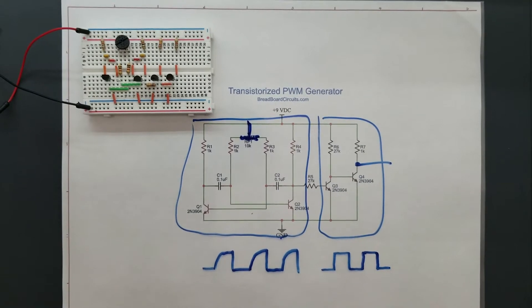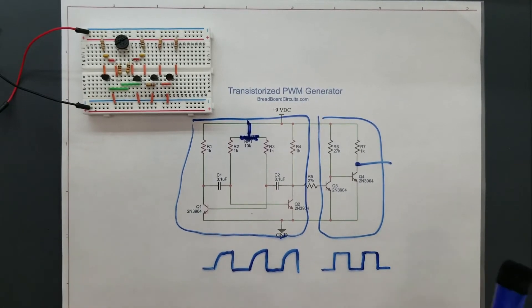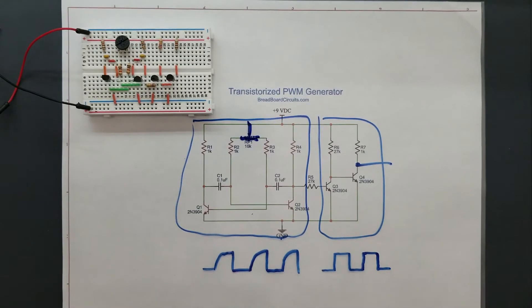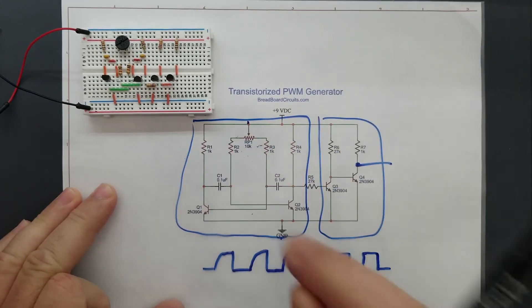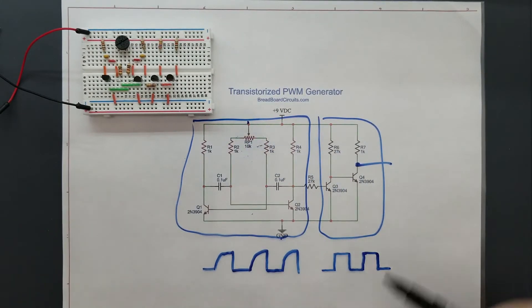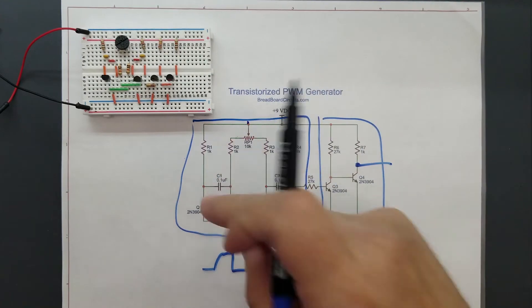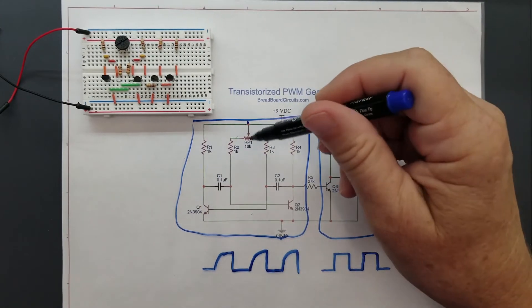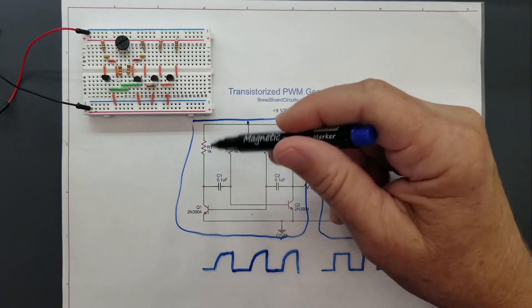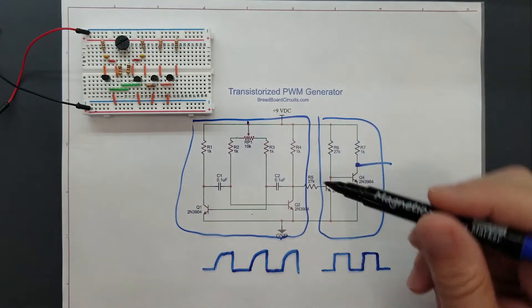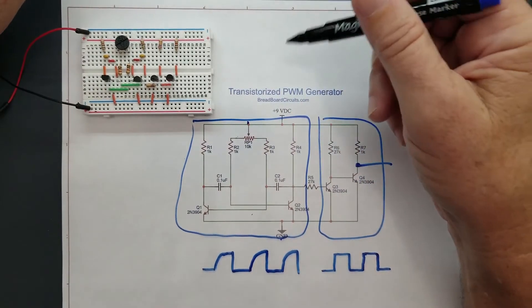So in order to turn this into a pulse width modulator, we need to introduce some asymmetry, which is really simple to do. We introduce this pot right there. And this potentiometer will basically change the time constant of one side of this multivibrator with respect to the other.